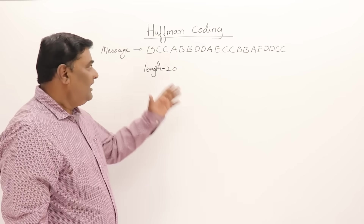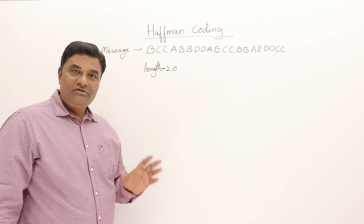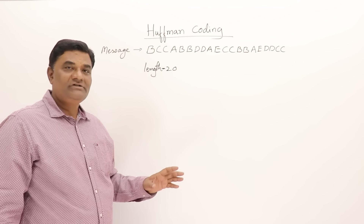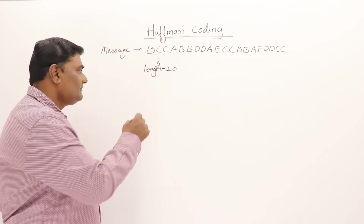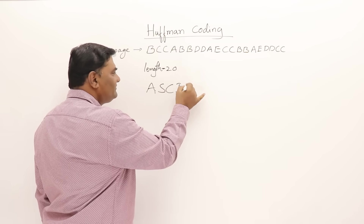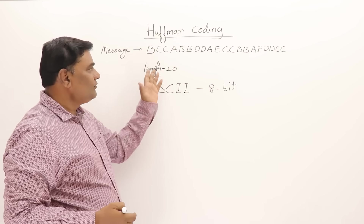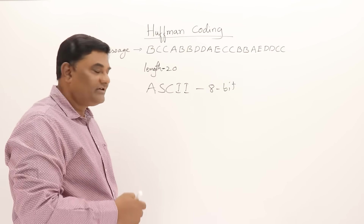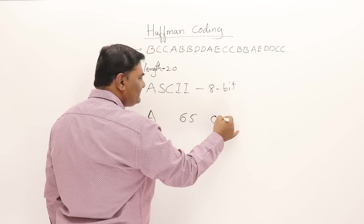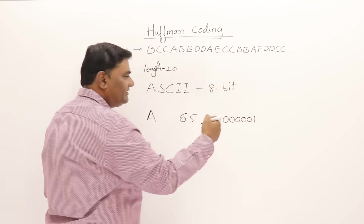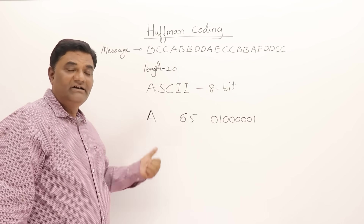This message has to be sent using ASCII code. Electronic devices and computers use ASCII codes for characters and English alphabets. ASCII codes are 8 bits. I have used alphabets A to E here, which is easy to understand. So if I say A, its ASCII code is 65, and the binary form is 8 bits representing decimal 65, which represents the letter A.